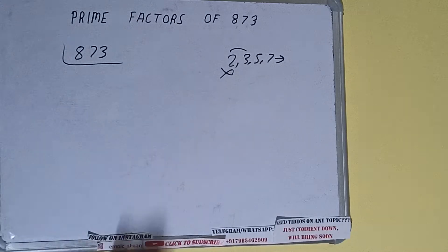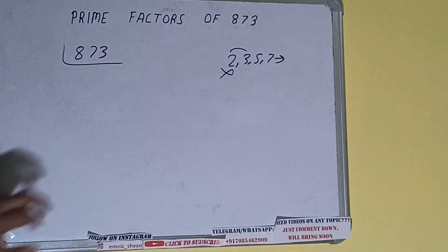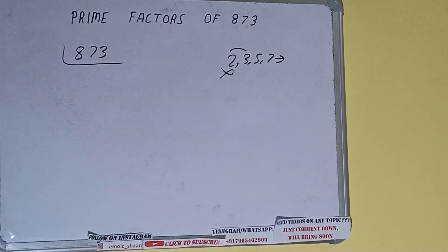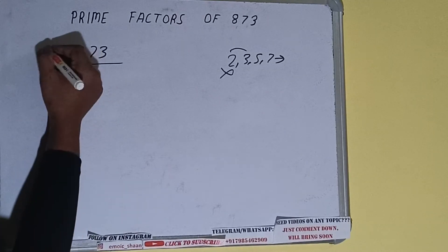So we'll check with the next lowest prime number, that is three. Is it divisible by three? Let's check. Three into two is zero, carry six, three into two is seven, carry three, three into nine is zero, carry twenty-seven, three into three is one, carry zero, three. It is divisible by three, so divide it.